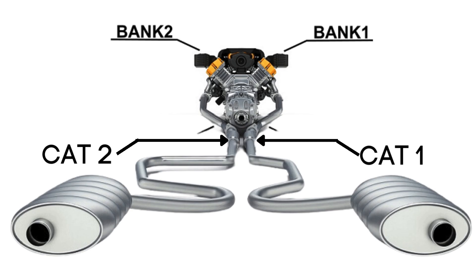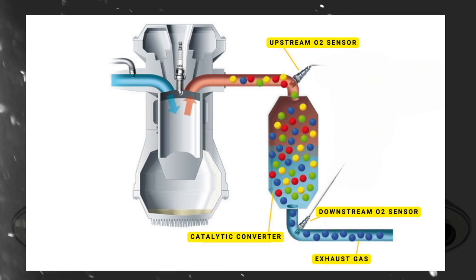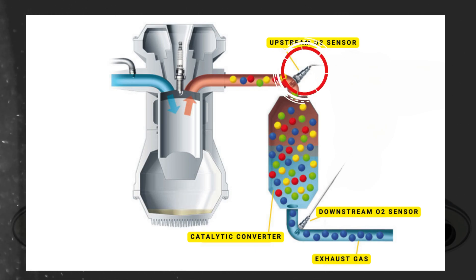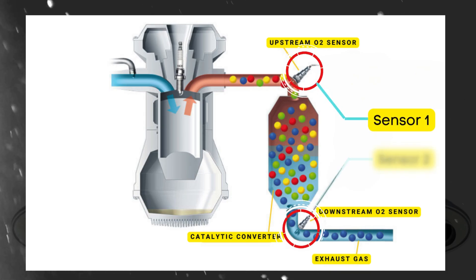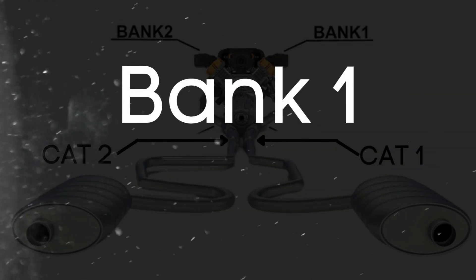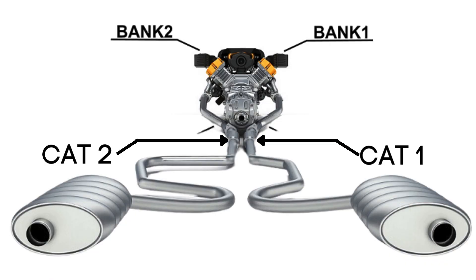Now here's where the oxygen sensors come in. Each catalytic converter has two oxygen sensors: an upstream sensor, which we call sensor one, and a downstream sensor, known as sensor two. So when we talk about bank one, sensor one, we're focusing on the oxygen sensor that's upstream on the side of the engine where cylinder one is located.